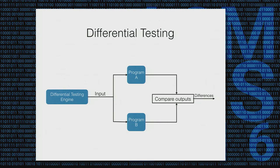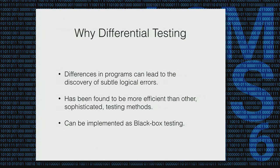You generate random mutations of some initial inputs and throw these inputs into both programs you are testing — the web application firewall and the browser — and then compare the output for differences. Differential testing is popular in this domain because differences in programs can lead to the discovery of very subtle logical bugs. If two programs implement the same specification but produce different outputs on the same input, then one of them is wrong.